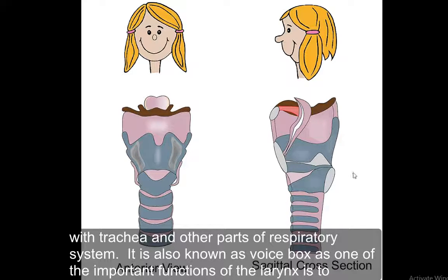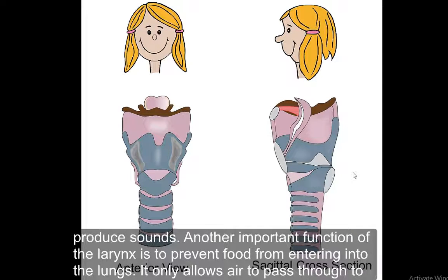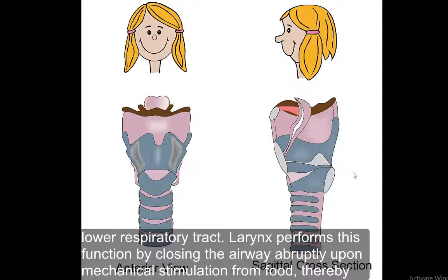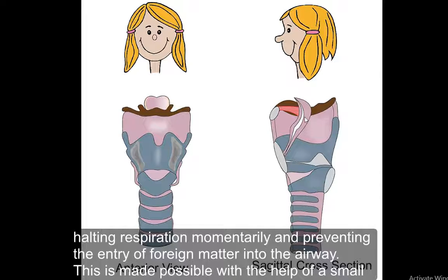The larynx is also known as the voice box, as one of its important functions is to produce sounds. Another important function is to prevent food from entering the lungs, allowing only air to pass through to the lower respiratory tracts. It performs this function by closing the airway abruptly upon mechanical stimulation from food, thereby halting respiration momentarily and preventing entry of foreign matter into the airway.